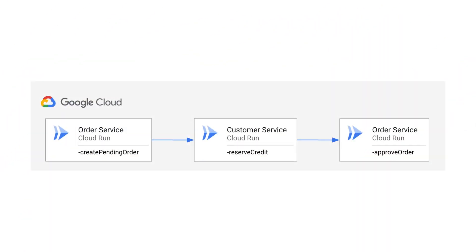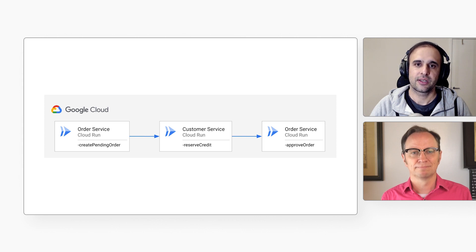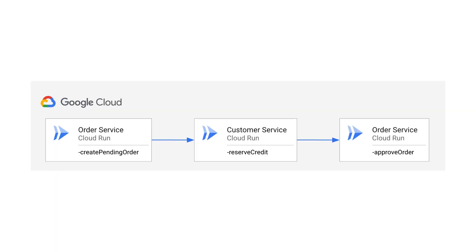Imagine you're building an e-commerce application. You need to receive orders and make sure customers have enough credit before you process the order. You could have two microservices. Order service receives a request and creates a pending order. Customer service tries to reserve the credit, and if it's successful, order service approves the pending order.